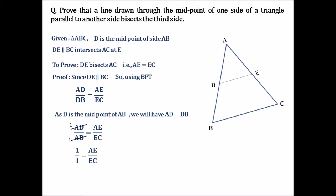Now, finally on cross multiplying we will have AE into 1 is AE and EC into 1 is EC. So, AE equals to EC has been proved. Hence DE bisects AC has also been proved.